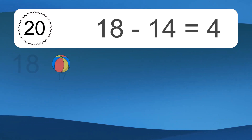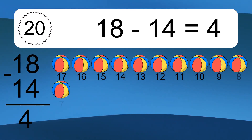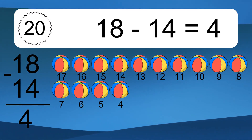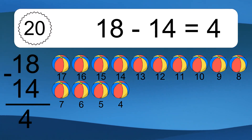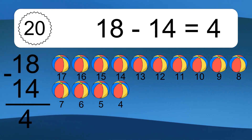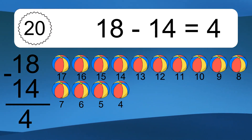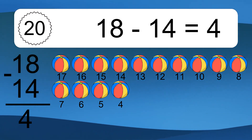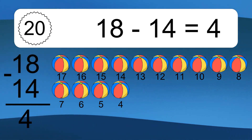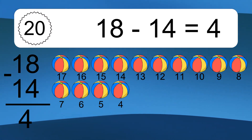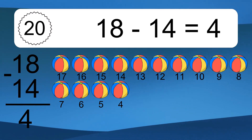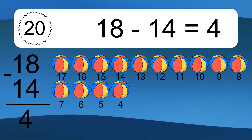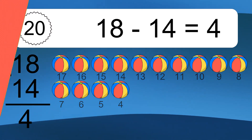18 minus 14 equals what? 18 minus 14 equals 4. Let's count it. 17, 16, 15, 14, 13, 12, 11, 10, 9, 8, 7, 6, 5, 4. We'll see you next time.